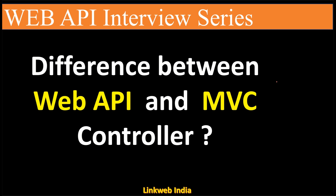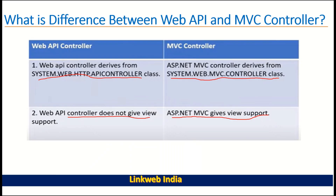Hello everyone, welcome back to my channel. Today we discuss the difference between Web API and MVC controllers. A Web API controller is inherited from System.Web.Http.ApiController, and an MVC controller is inherited from System.Web.Mvc.Controller.